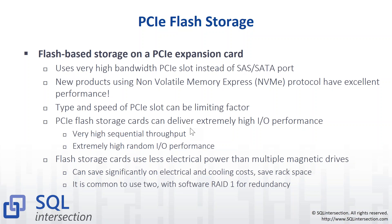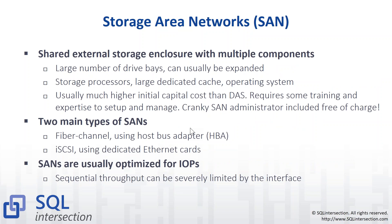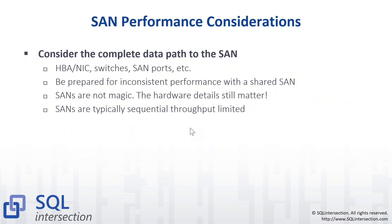Storage Area Networks are big, expensive, shared external storage enclosures with lots of complicated components. They give you nice capabilities like SAN snapshots and thin provisioning, but have a lot of issues with SQL Server — and they come with a cranky SAN administrator. The two main types are Fiber Channel and iSCSI. SANs are typically optimized for IOPs; sequential throughput can be their big Achilles heel. For SAN performance, consider the complete data path: your HBA, NIC, switches, any SAN ports. Be prepared for inconsistent performance with a shared SAN.